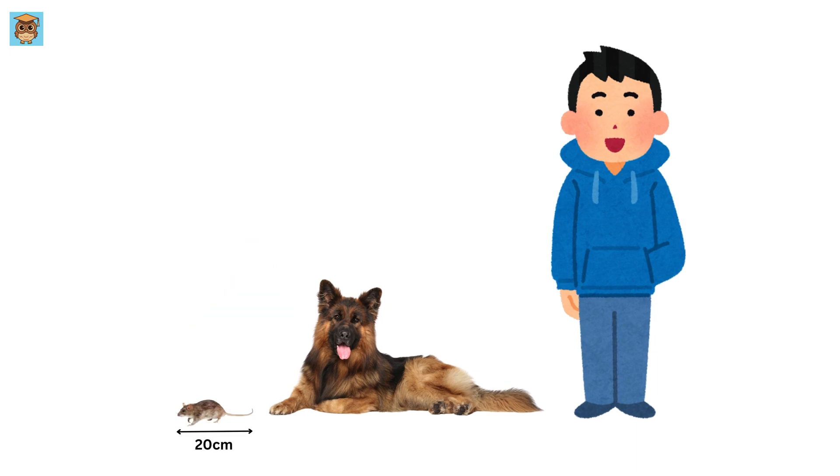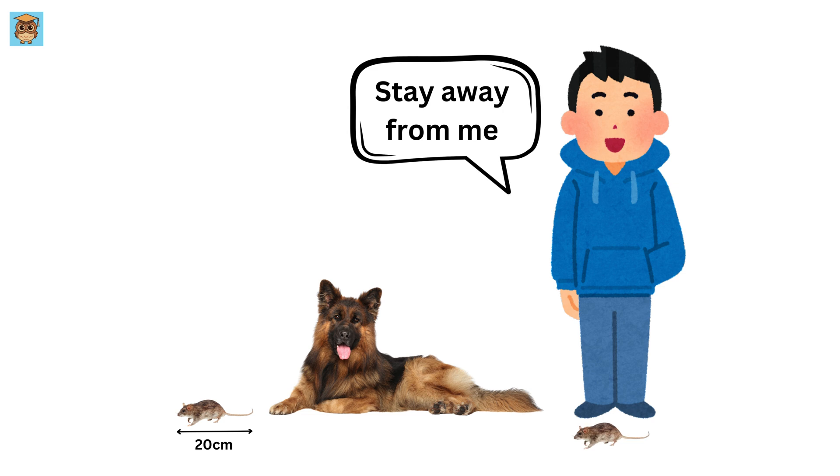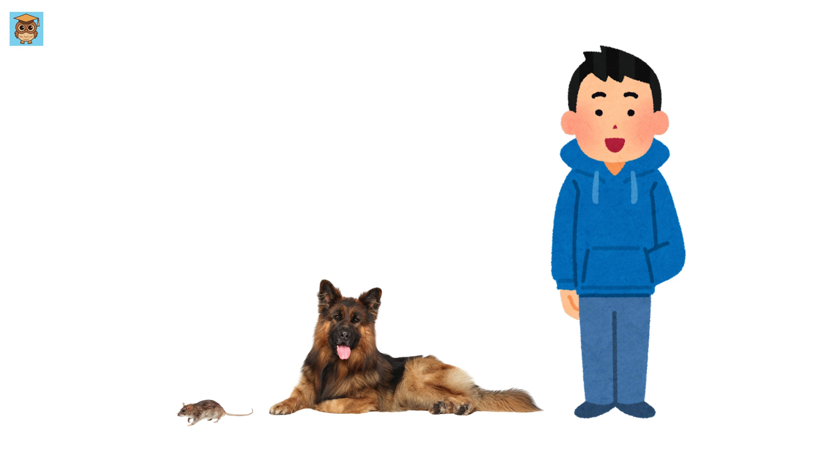A rat, on the other hand, is much smaller, about 20 centimeters long. That's about the size of your foot. Now, let's shrink even more. A smartphone is around 15 centimeters tall, which is smaller than a rat, but something you hold every day.